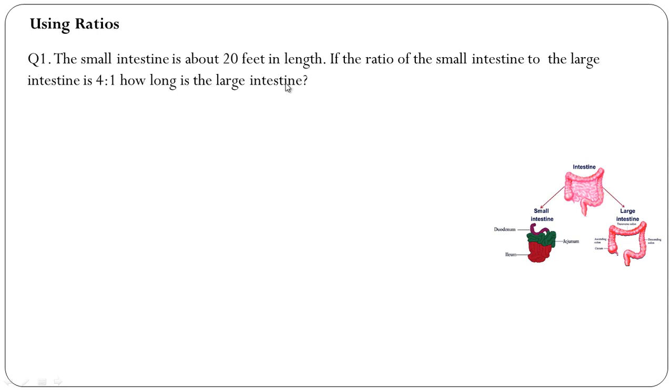Question number one: The small intestine is about 20 feet in length. If the ratio of the small intestine to large intestine is 4 to 1, how long is the large intestine? We have small to large ratio, that is 4 to 1, meaning for every 4 feet of small intestine we have 1 foot of large intestine.